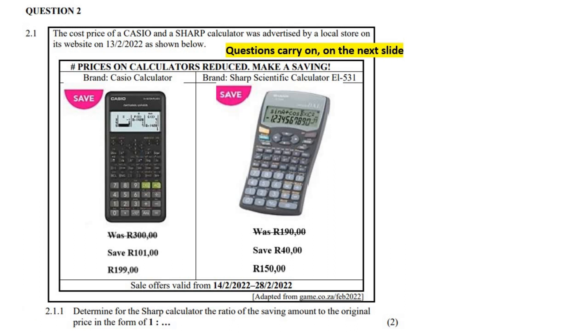So the first question says, determine for the Sharp calculator the ratio of the savings amount to the original price. So they said the ratio of the savings amount first. So what is the savings amount? It's 40 rand. So 40 rand, and then what is the original price? The original price is the 190, so you could say 190.